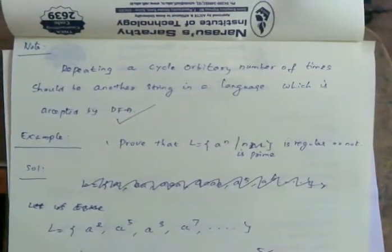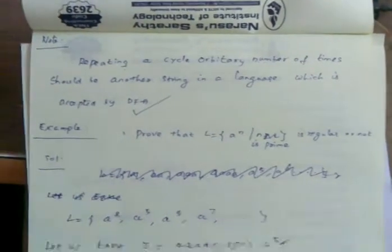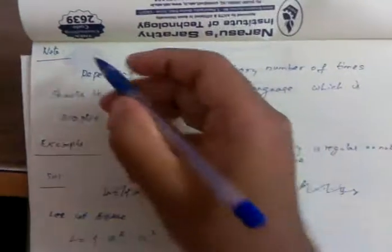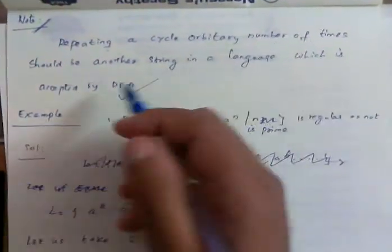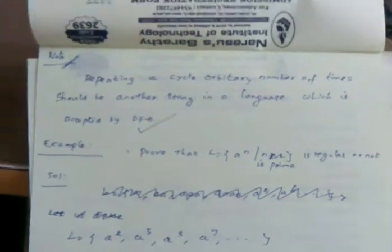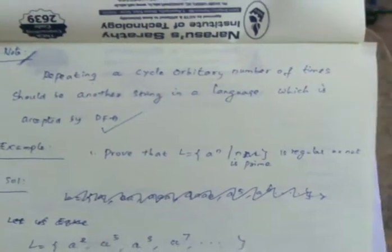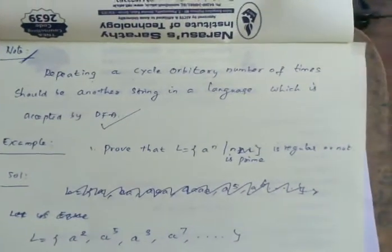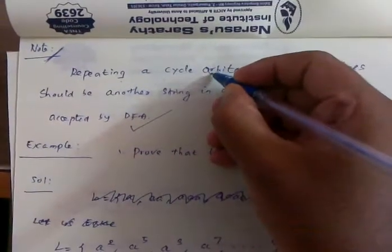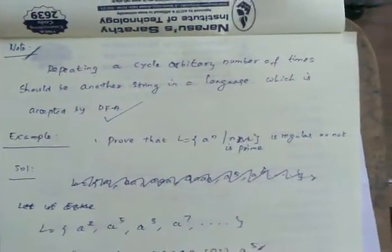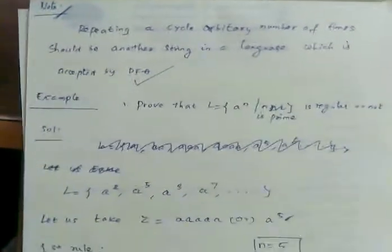Today we are going to see about the pumping lemma. Before going to the problem, repeating a cycle an arbitrary number of times should give another string in a language accepted by DFA. If we repeat a particular intermediate string in a given string an arbitrary number of times, we will get a string that is present in a language accepted by DFA.